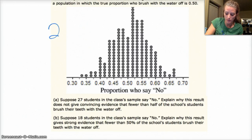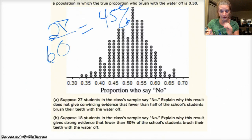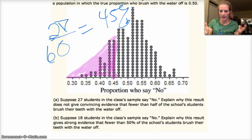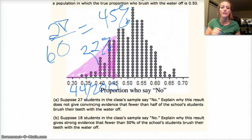Suppose 27 students in the class say no. Explain why this result does not give convincing evidence that fewer than half the school students brush their teeth with water off. Well, 27 out of 60 is exactly 45%. So you're getting 45% of the population saying that they don't shut their water off. So if the true proportion is 50, the likelihood of us getting 45% or less than that, that value or anything more extreme, is close to however many dots we have there. I counted them, I think there's about 44 dots in that little area, and that's out of 200 trials, which is about 22% of the time. So this area, remember this is a density curve, so the probability of that happening is about 22%, which isn't really convincing evidence that the mean is different than 50.